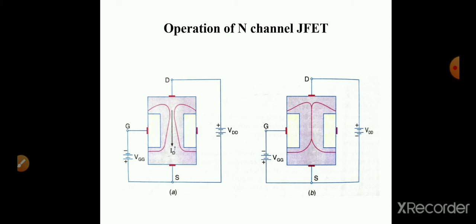The drain current starts to flow when VDD voltage is applied across the drain-source terminal. When VGG is increased above zero volts, the depletion region forms across the P-N junctions. There are two P-N junctions, and the depletion region at the P-N junctions grows more into the channel. If we increase the reverse bias across the gate-source junction, the depletion region becomes more widened and deeper into the channel.